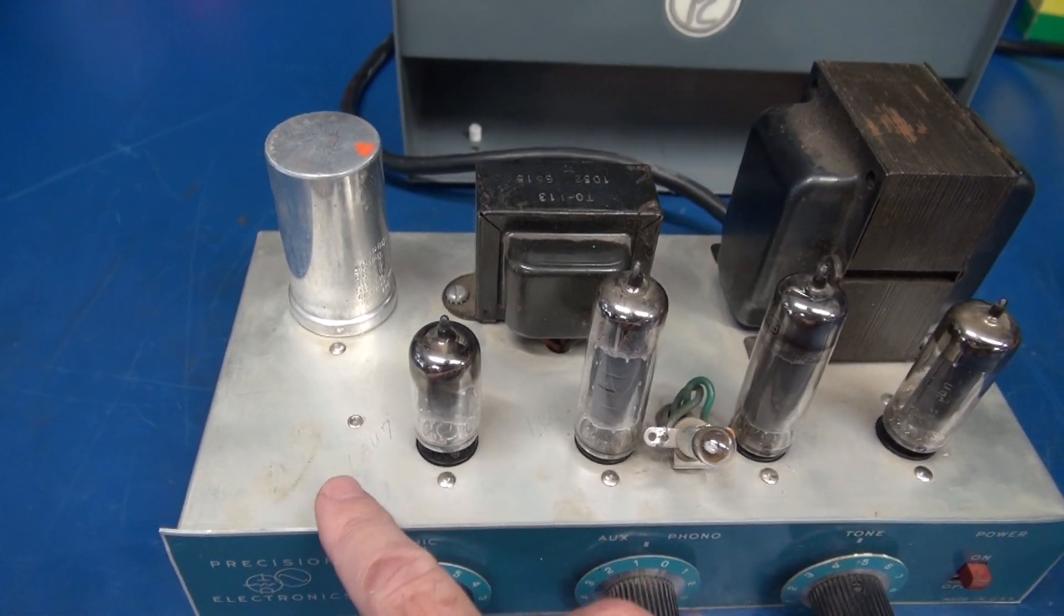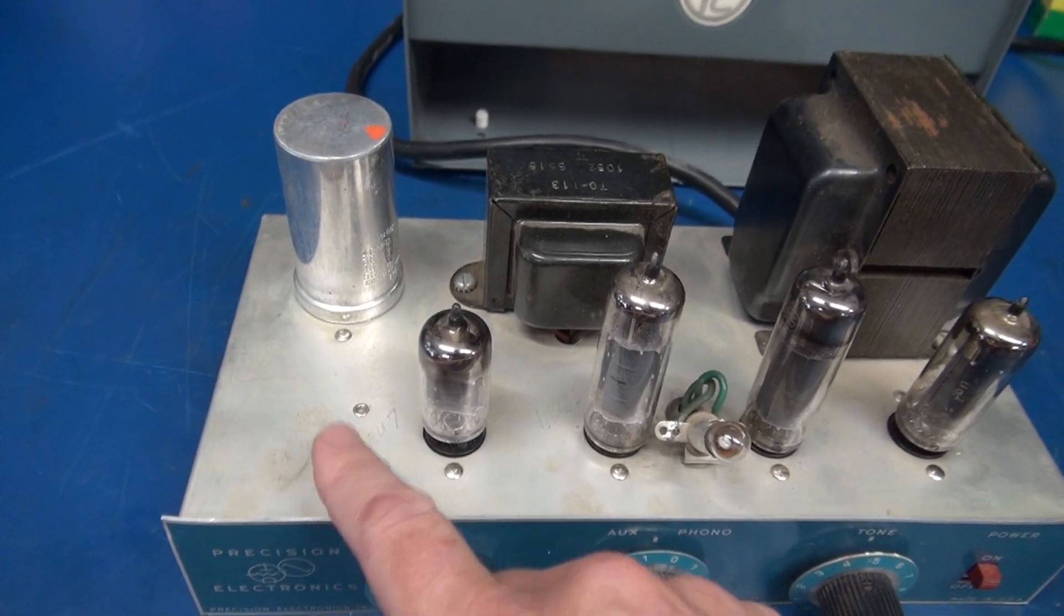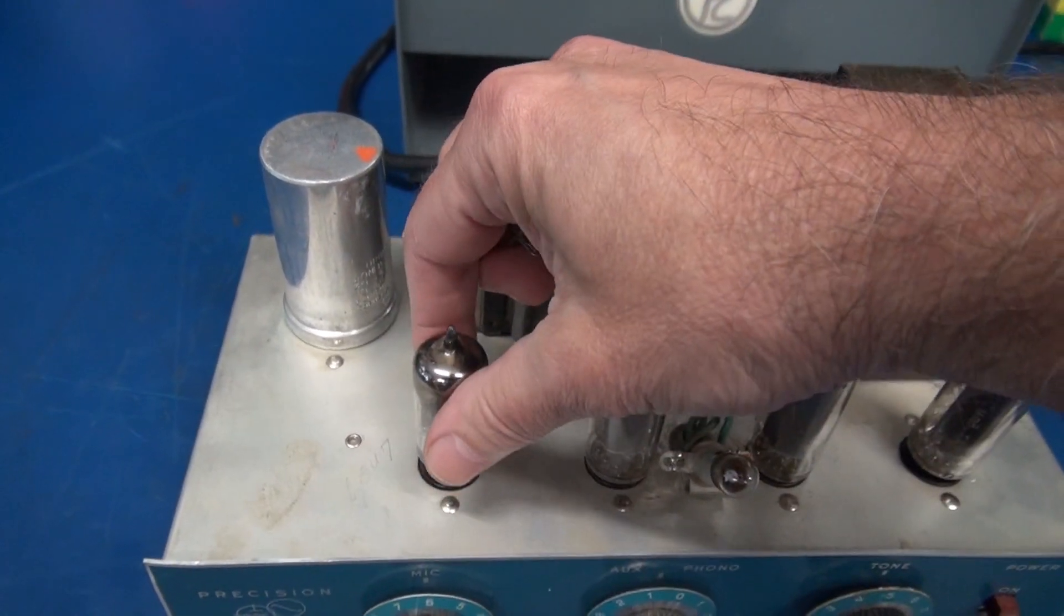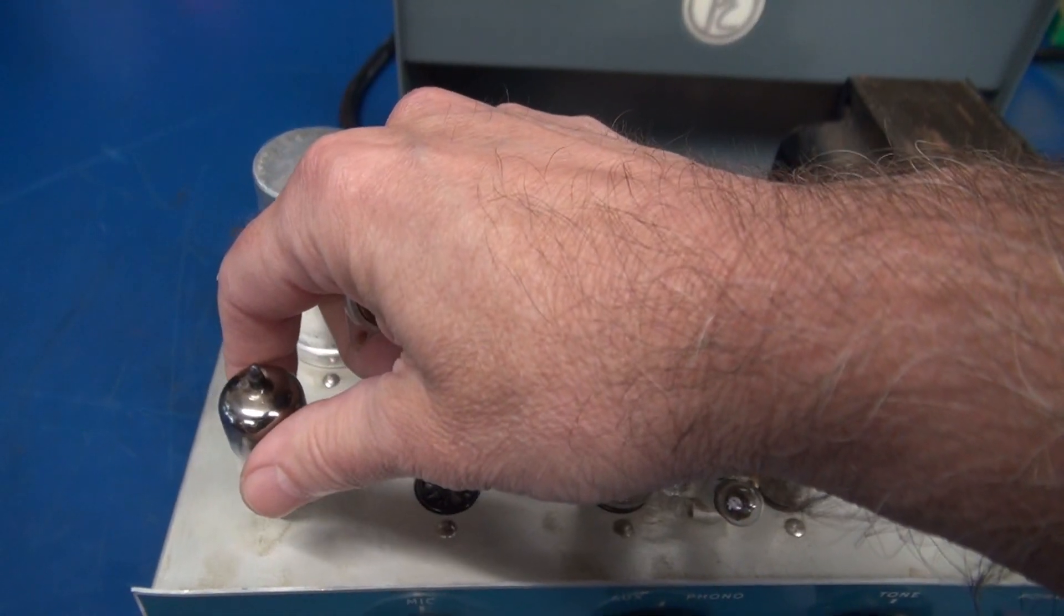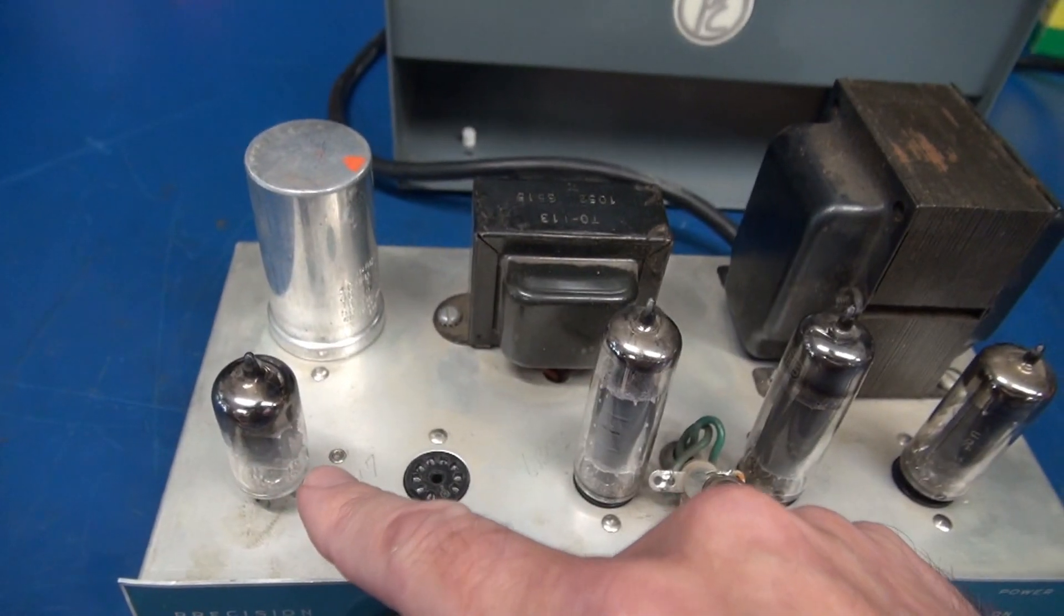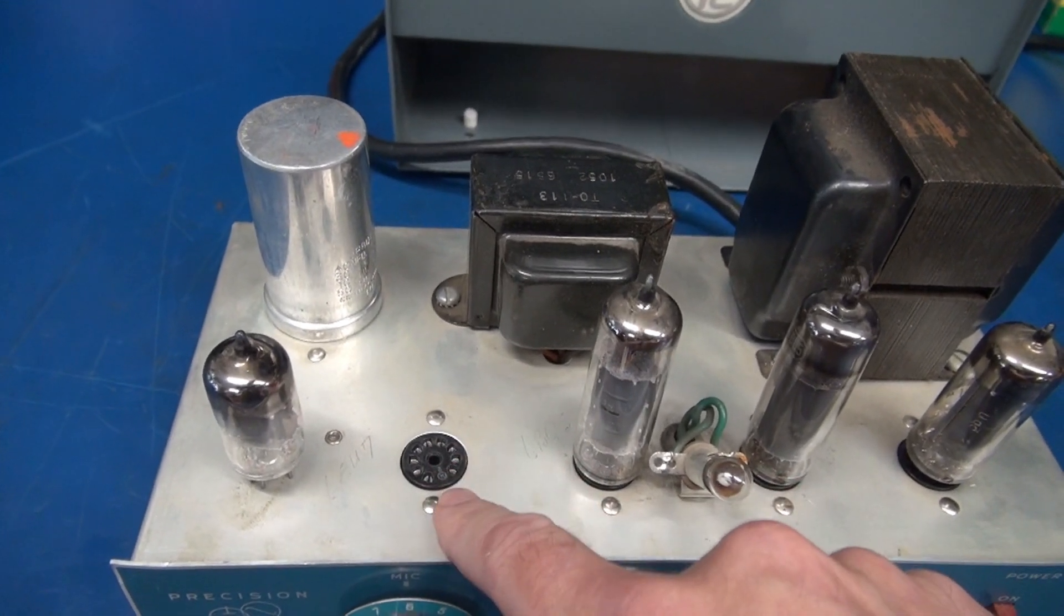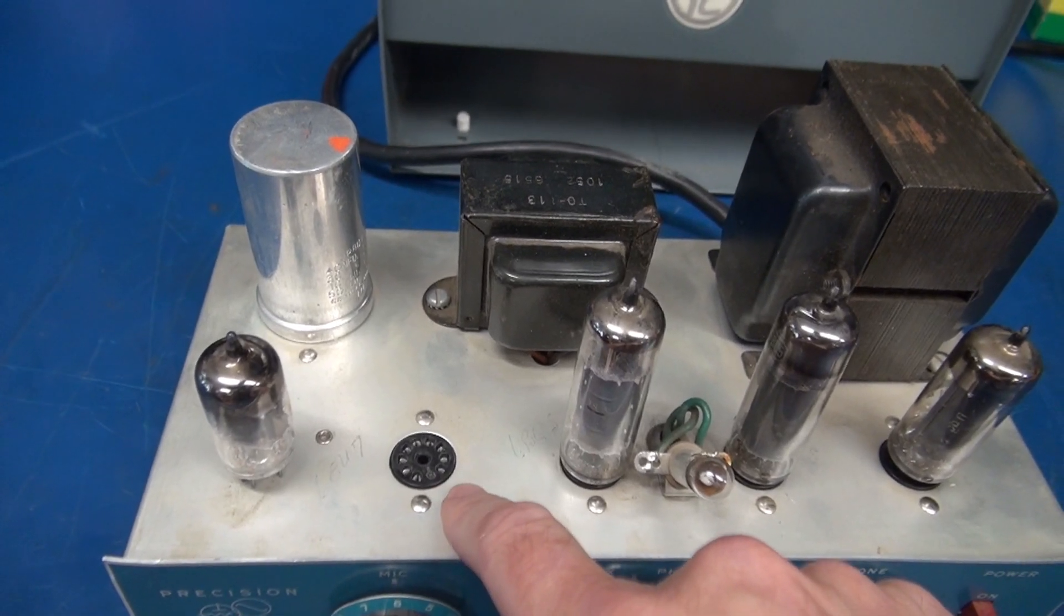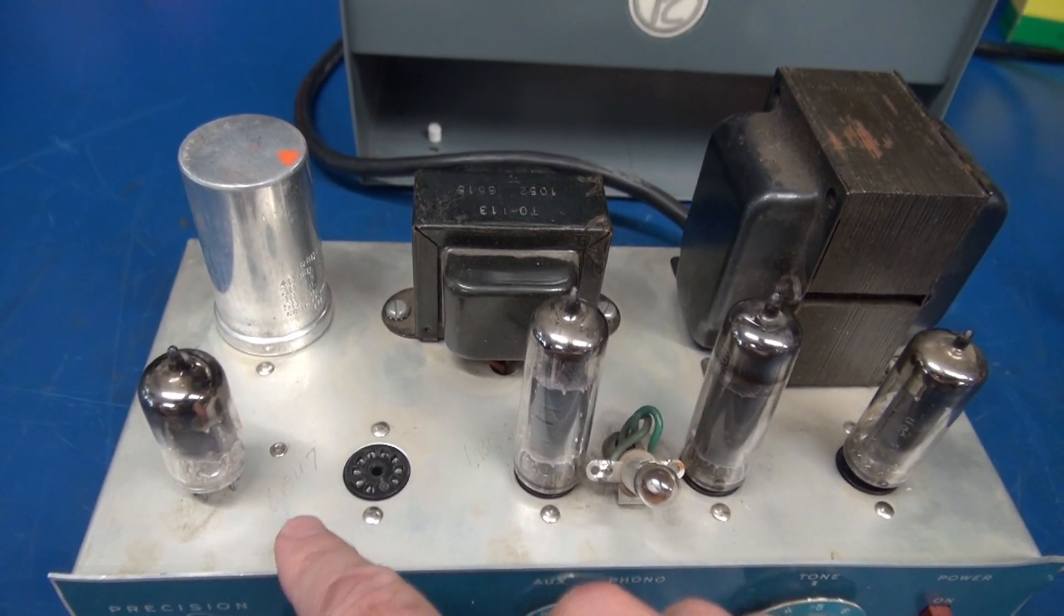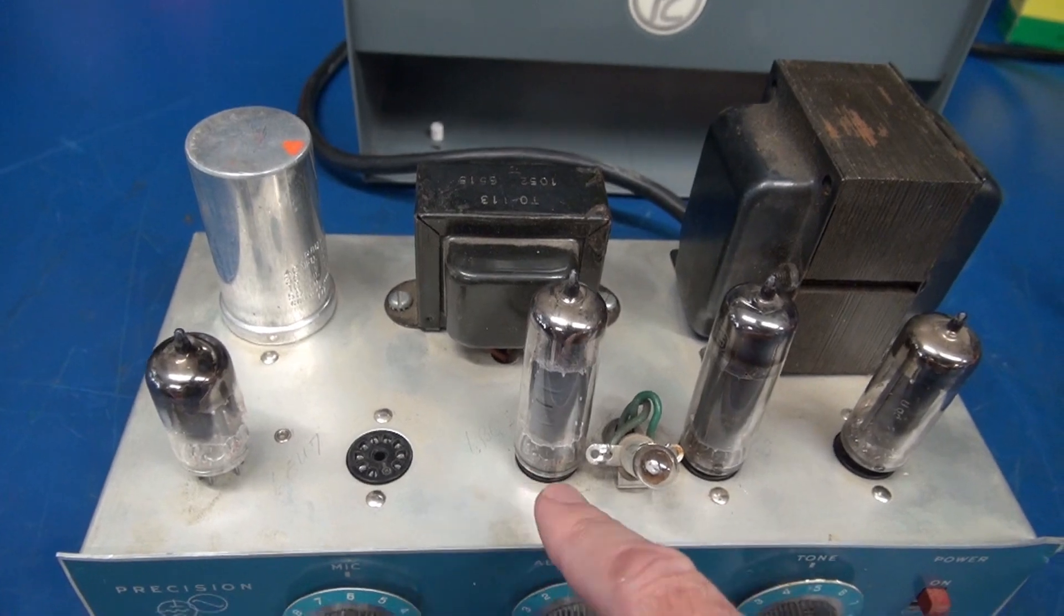First thing, you have to have a preamp tube. So what I do is I remove the 6EU7 and just envision that that is now a 12AX7. Then this socket becomes the inverter, which in this case would be a 6AV6. So now instead of a four tube amp, it'll be a five tube.